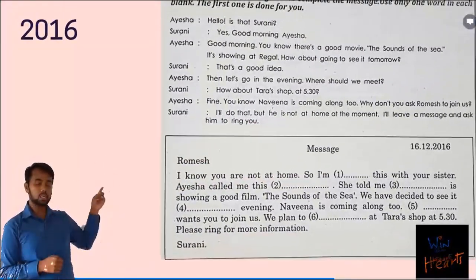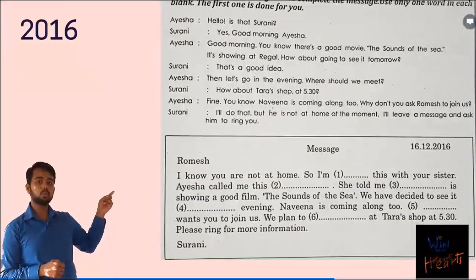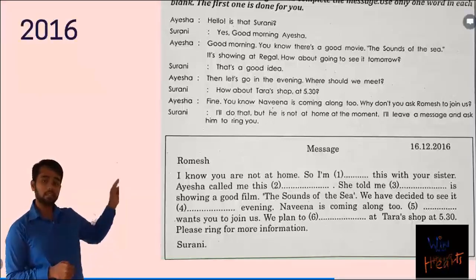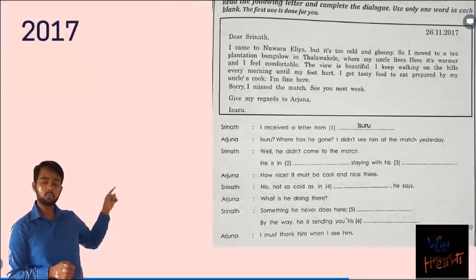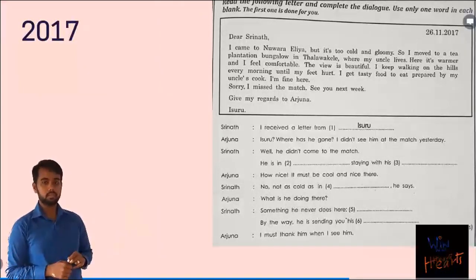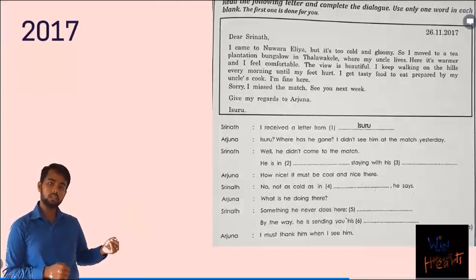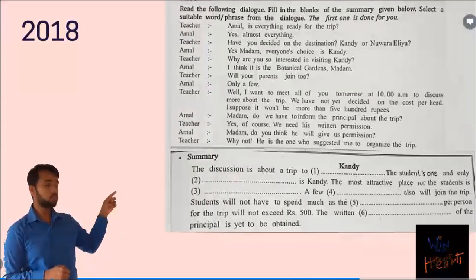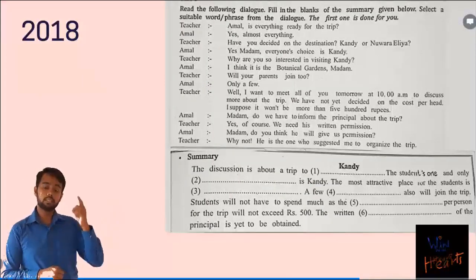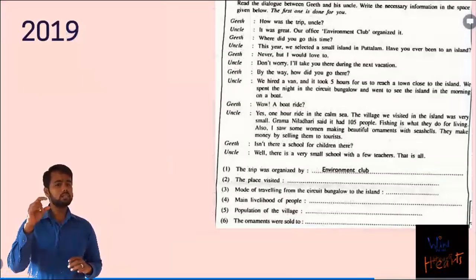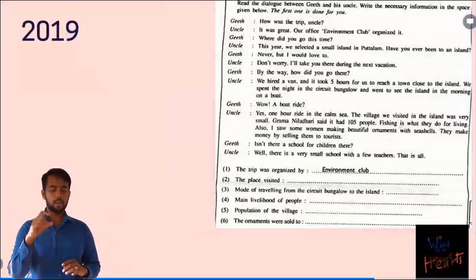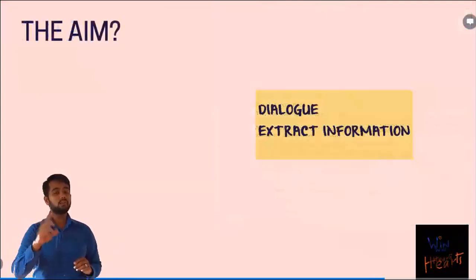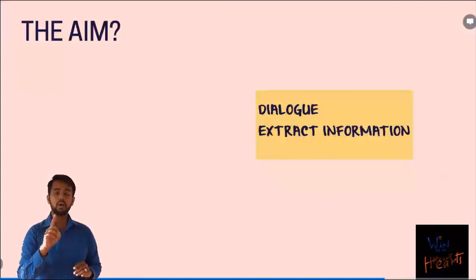For example, you can see this activity is from the 2016 O-Level paper, and this one is from the 2017 paper. The next one — yes, 2018, you are correct. And finally, this one is from 2019. Please read carefully the passage or the dialogue that has been given and try to fill in the blanks.